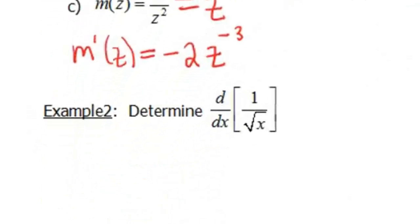Next example I have has a little bit different notation. This d/dx just means take the derivative with respect to x. So in this case, x is our variable. And the function we wanna look at is 1 over the square root of x. Even though the directions look very different than the first example we did, it's asking the same thing - find the derivative of this function with respect to x.